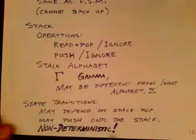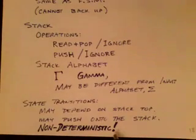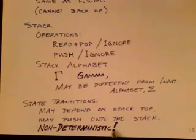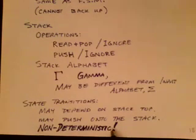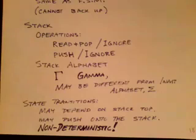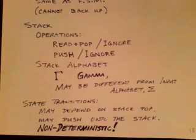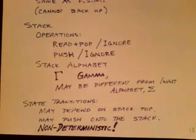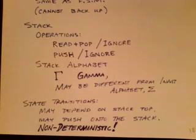The machines we're describing are going to be non-deterministic. It turns out that with finite state machines, there is no difference in power between deterministic and non-deterministic versions. But the same is not true with pushdown automata — the non-deterministic machine is strictly more powerful than the deterministic pushdown automaton. When we get to Turing machines, non-determinism doesn't buy you anything — deterministic and non-deterministic Turing machines have the same power. But in the case of pushdown automata, determinism or non-determinism is an important difference. When we say pushdown automaton without further explanation, we'll assume it's a non-deterministic pushdown automaton.